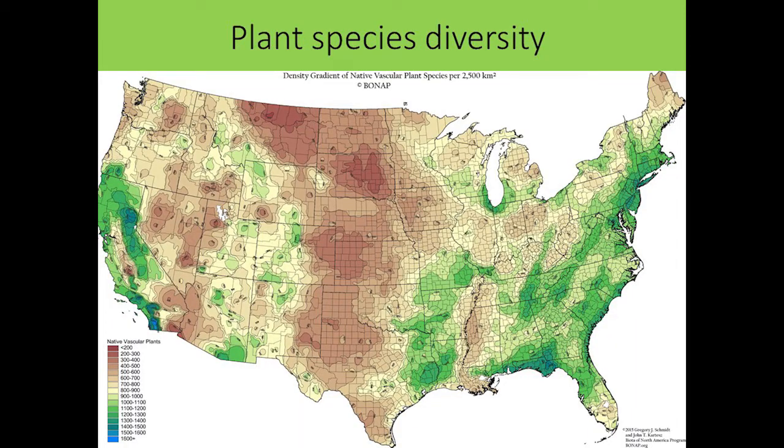Tropical biodiversity is different from temperate, and different from boreal biodiversity — different species occur in those different areas, so it's not a trade-off. The southeastern United States is particularly rich in temperate biodiversity. If we zoom into the United States and look at plant species diversity, we see the greens and blues of areas with high diversity, mainly in the eastern and particularly southeastern US, and also California.